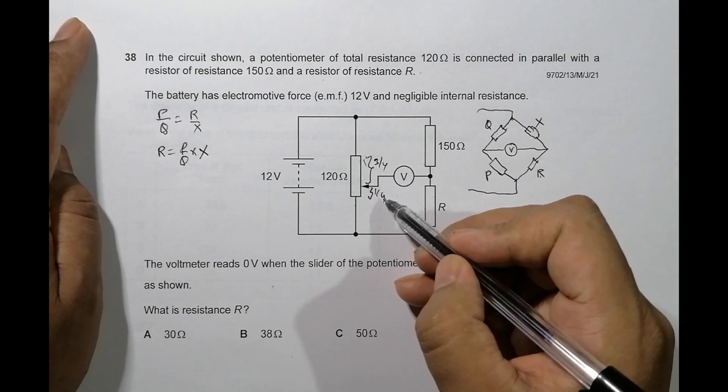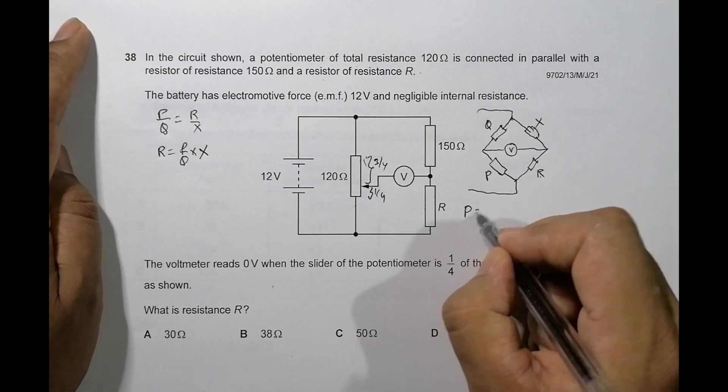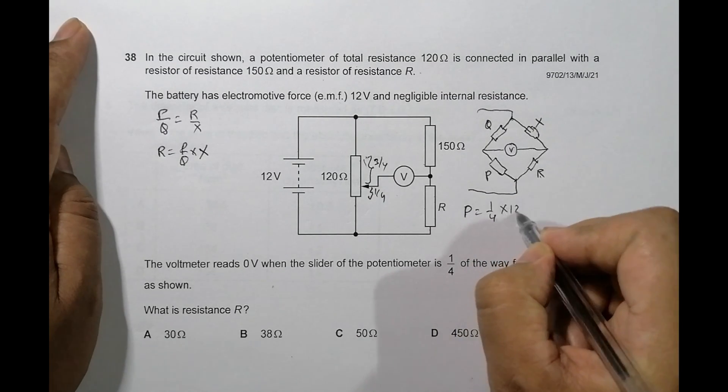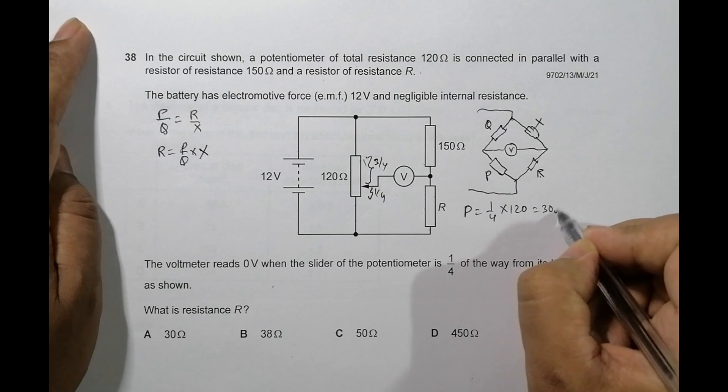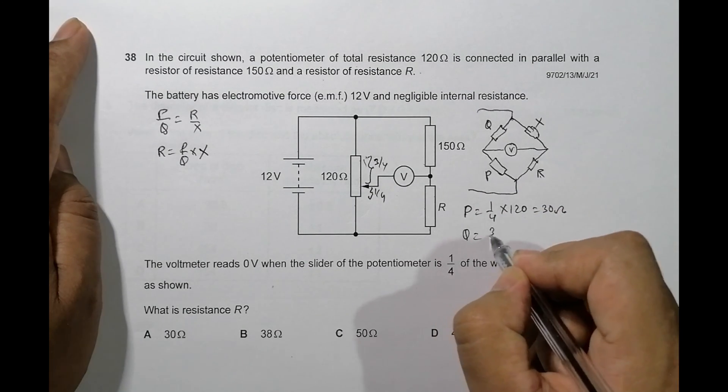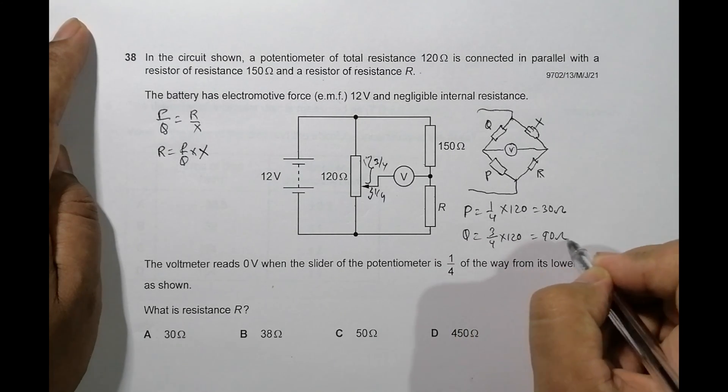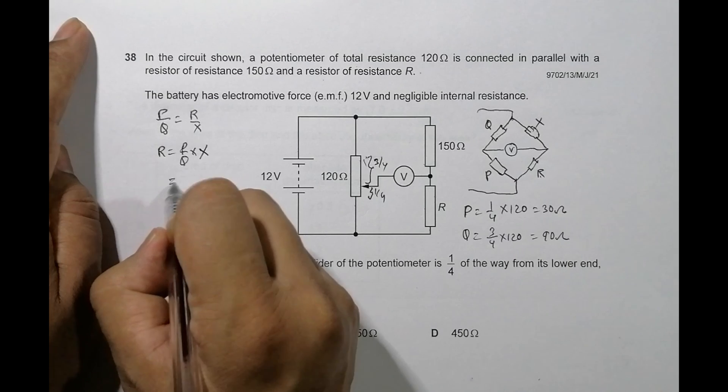Now what is P and what is Q? This P is 1 by 4 of this thing, so P is equal to 1 by 4 into 120 which is equal to 30 ohm. Similarly Q will be the remaining, so Q is equal to 3 by 4 into 120 ohm which is equal to 90 ohm.